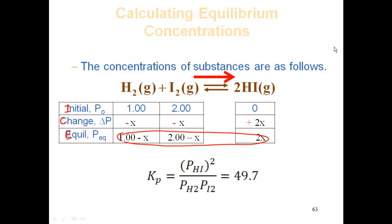It's equal to 49.7. Now, these are your equilibrium pressures. So I'll plug in the expressions at equilibrium, which in this case is 2X for HI, 2 minus X for I2, and 1 minus X for H2. Plug in for those, and then solve for my X.